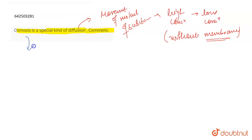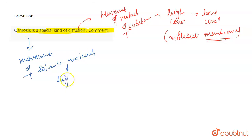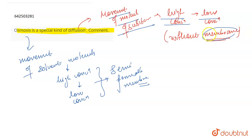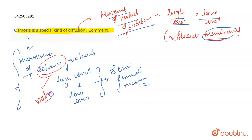But if we talk about osmosis, then osmosis is the movement of solvent molecules — specifically solvent molecules — from a region of high concentration to a region of low concentration through a semi-permeable membrane. The movement of solvent molecules, which can be water molecules, passes through a semi-permeable membrane.